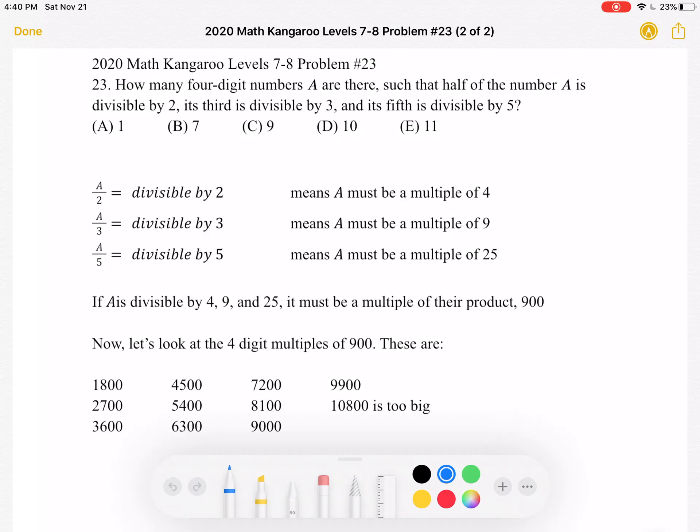To start, we have this four-digit number A, such that half of the number A is divisible by 2. That means that A over 2 is divisible by 2, which means that A itself must be a multiple of 4.